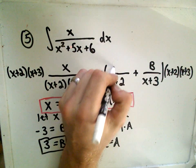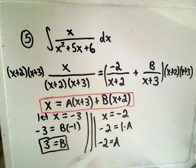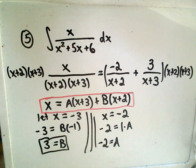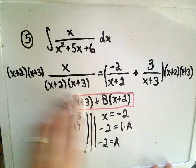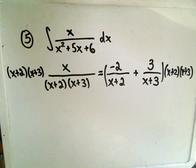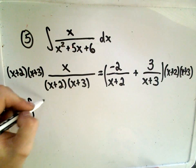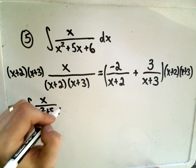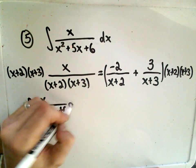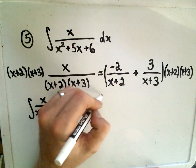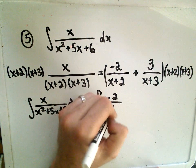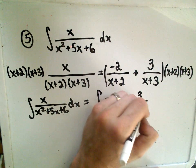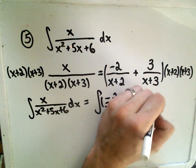So I need to plug that back in. I know now A is negative 2. I know that B has value positive 3. And now, what I'm going to do instead of integrating this original thing, instead of integrating x over x squared plus 5x plus 6 dx, instead what we can do is integrate negative 2 over x plus 2 plus 3 over x plus 3 quantity dx.